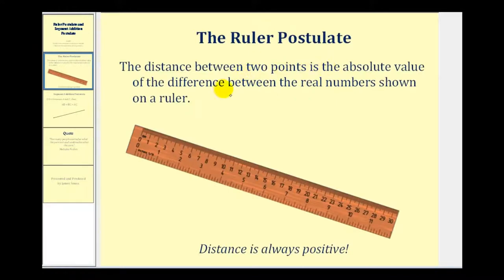The ruler postulate states the distance between two points is the absolute value of the difference between the real numbers shown on a ruler.